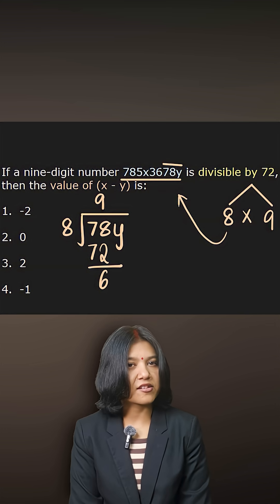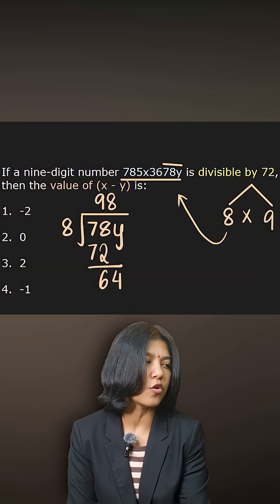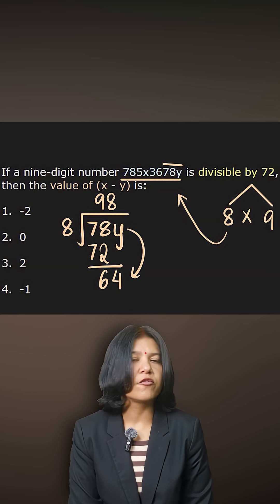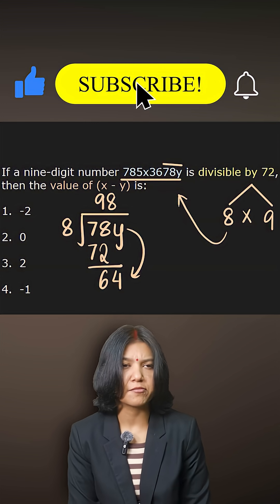8 times something is 64, which is 8 times 8 is 64. So only when this is 4, only when I have 4 instead of y, I can make sure that this overall number is divisible by 8. So it is confirmed that y has to be 4.